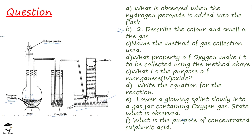The last question asks: what is the purpose of the concentrated sulfuric acid? As seen in the diagram, the concentrated sulfuric acid is used to dry the oxygen gas before it is collected. That brings us to the end of today's questions. I hope you have been able to understand. See you in the next session. Bye.